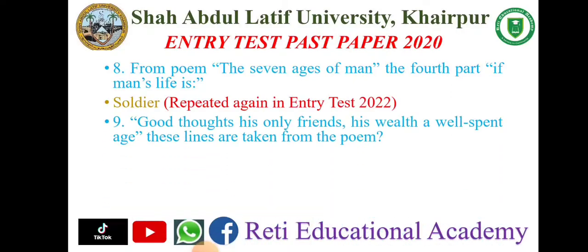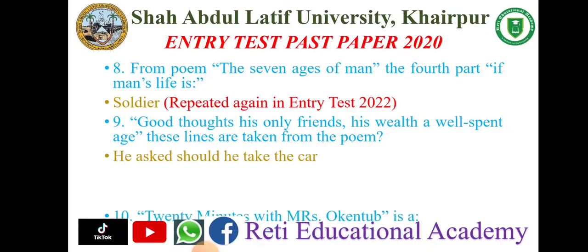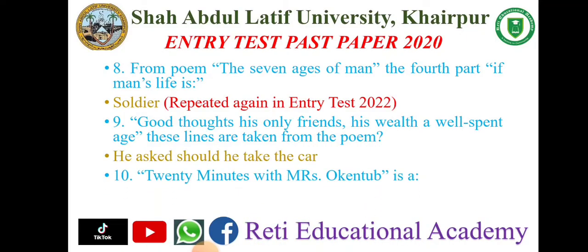Question number nine: 'Good thoughts his only friends, his wealth, a well-spent age' — these lines are taken from a poem. You have to answer question number nine in the comment section. Question number ten: 'Twenty Minutes with Mr. and Mrs. Ockentop' is a Melodrama.